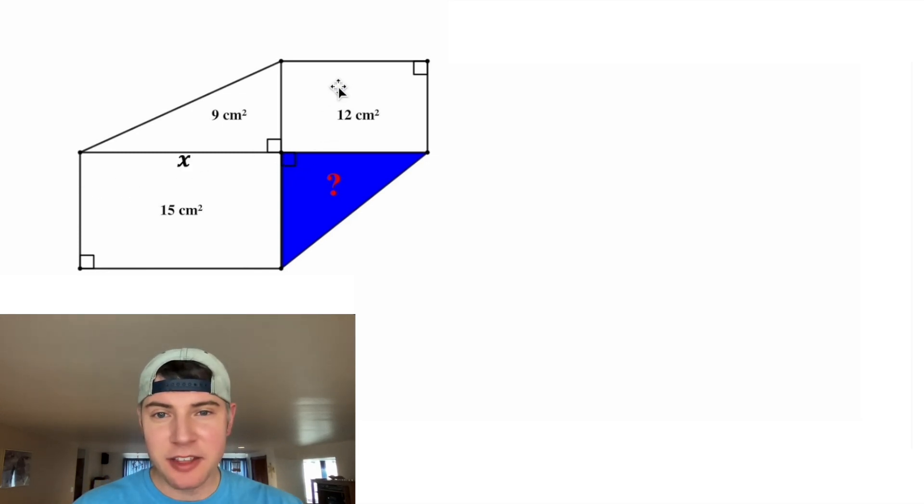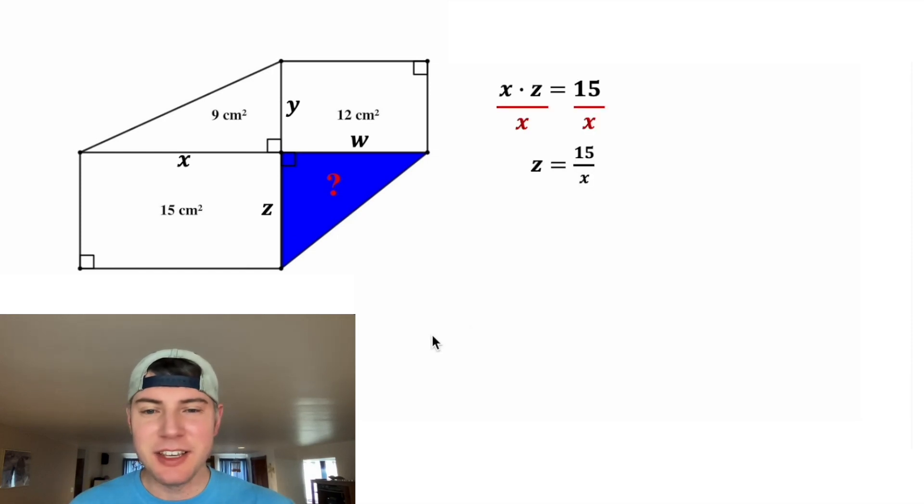I called this side X, this side Y, this side Z, and this side W. So let's start with this rectangle. X times Z is equal to 15. And after we divide both sides by X, we get Z is equal to 15 over X.